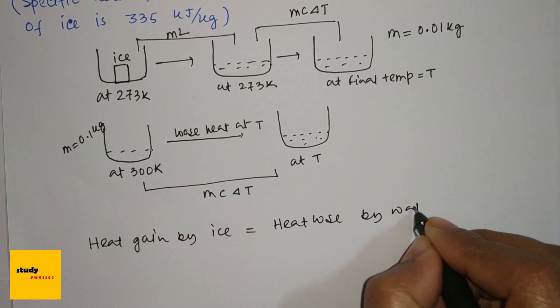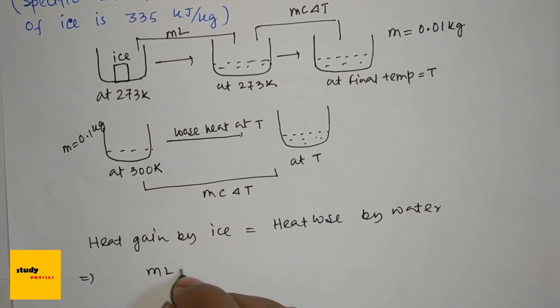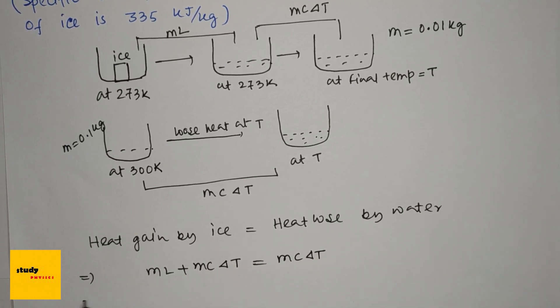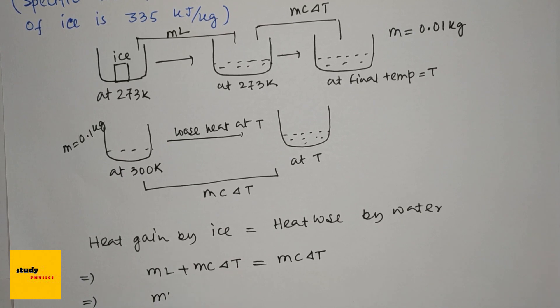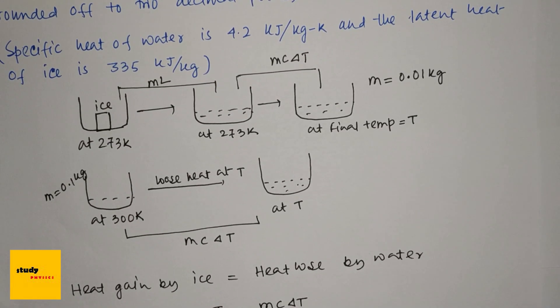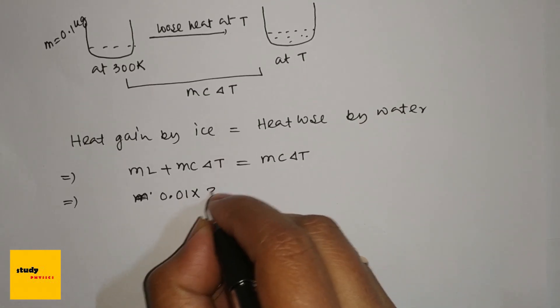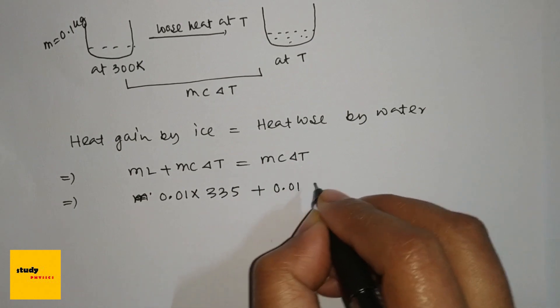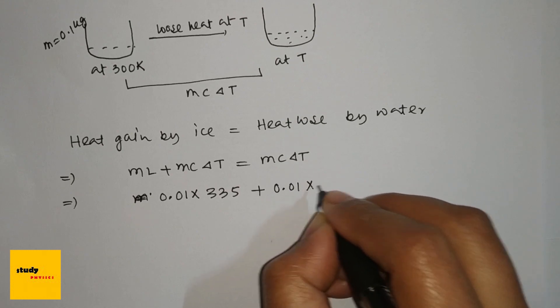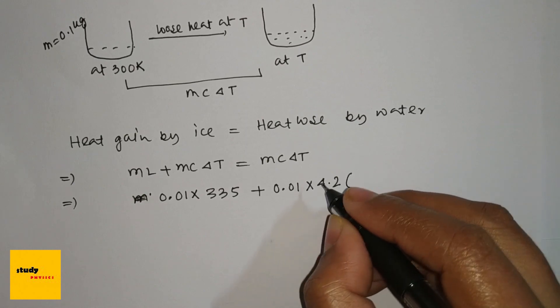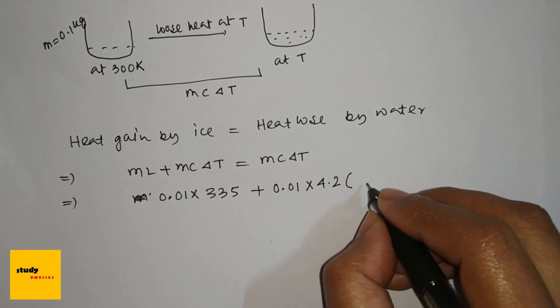So here ML plus mc delta T. Here, M is 0.01 kg times L, the latent heat of ice, which is 335 kilojoules per kg Kelvin, plus 0.01 kg of water times the specific heat of water times specific heat is 4.2 kilojoules per kg.